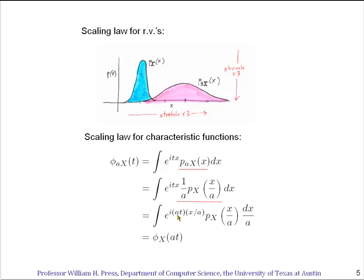And now this integral is the integral over this new dummy variable dx over a. I could replace that by another letter, but I didn't want to confuse you. And you'll see we basically just have a characteristic function again. But its argument is no longer t, its argument is now a times t.